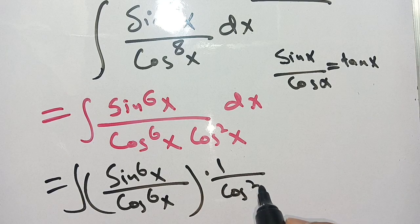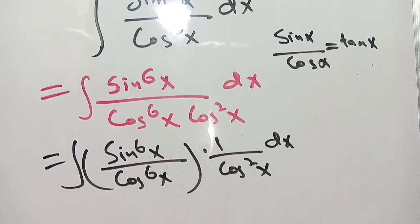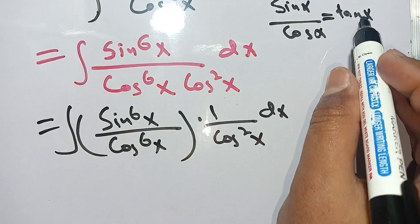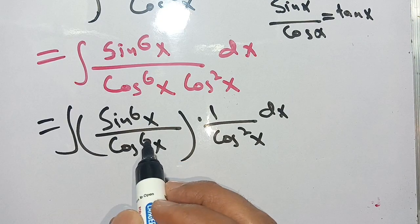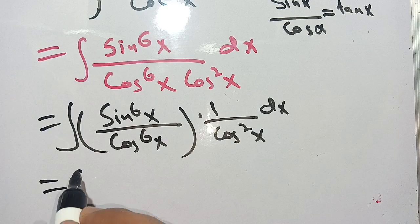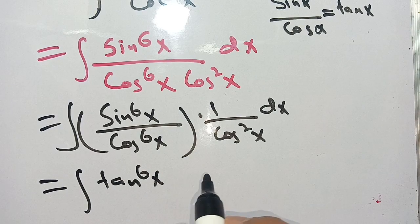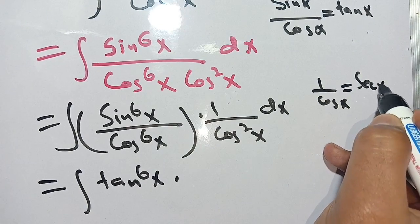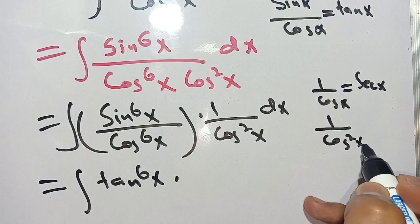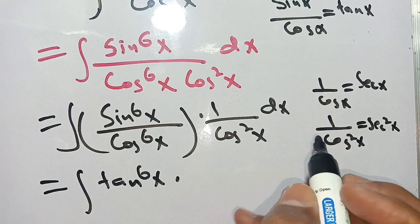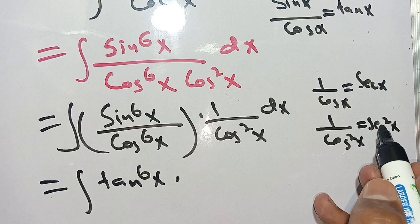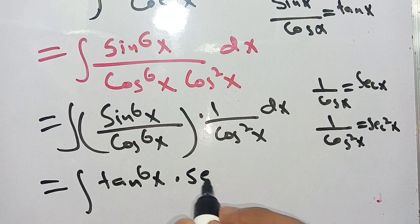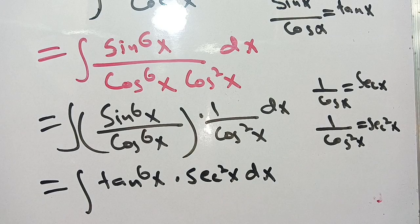In the next step, we know that sin(x) divided by cos(x) is equal to tan(x), so sin⁶(x) divided by cos⁶(x) equals tan⁶(x). We also know that 1 divided by cos²(x) is equal to sec²(x). So we replace it, giving us the integration of tan⁶(x) times sec²(x) dx.